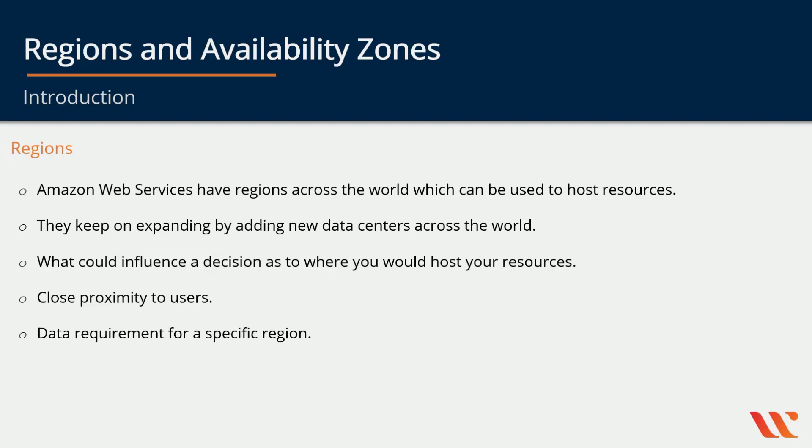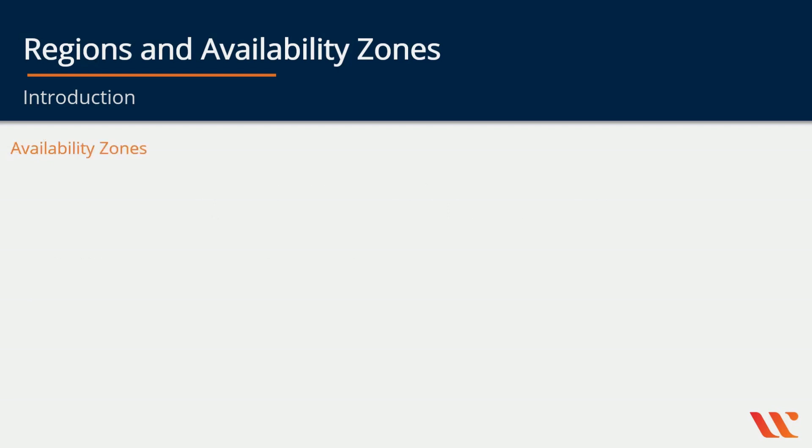Another factor could be the data requirement for a specific region. For example, if data needs to be stored in a specific region in the world, you might then use that region in AWS to host the relevant resource. There are different factors that could contribute to where you would host your resource in AWS.